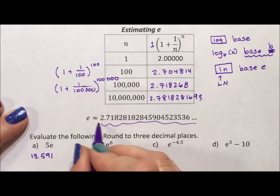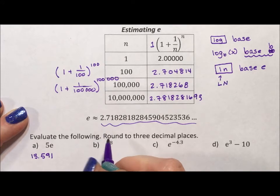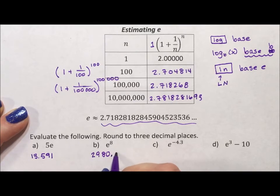E to the 8. Now, e is between 2 and 3, so to the power of 8, it's going to be a pretty big number. So 2,980.958.